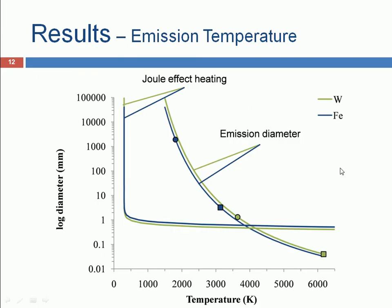So this graphic will answer this question for us. In the y-axis we have the diameter, in the x-axis we have the temperature. These emission diameter curves show the reduction of the diameter required to produce 100 A with the temperature increase, while the Joule effect heating curves show the maximum temperature reached by an electrode of a specific diameter.